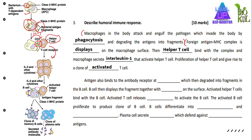Antigen also binds to the antibody receptor on B cell and is degraded into fragments inside the B cell. The B cell then displays the fragment together with MHC on its surface. Activated helper T cell then binds with the B cell at the antigen-MHC complex, and secretes interleukin-2 to activate the B cell.